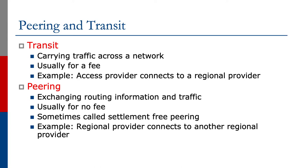We're now going to look at the definitions of peering and transit. Transit means carrying traffic across a network, usually for a fee — for example, an access provider connects to a regional provider. Peering means exchanging routing information and traffic; the business activity of peering is done for no fee, sometimes called settlement-free peering. For example, a regional provider connects to another regional provider.